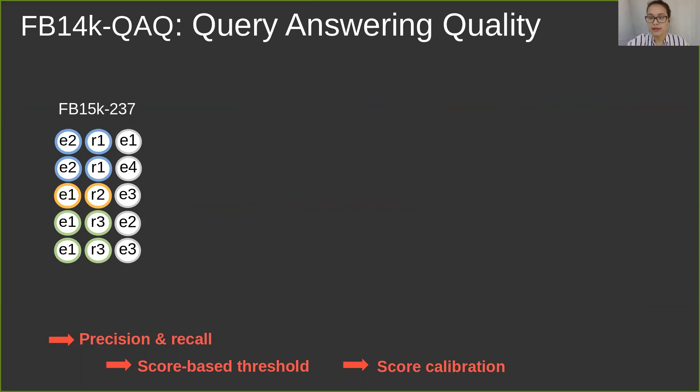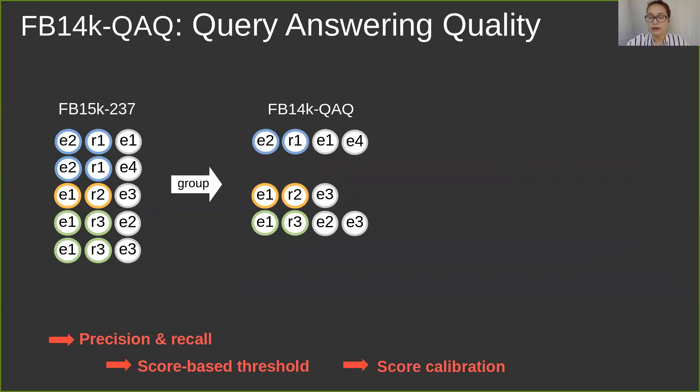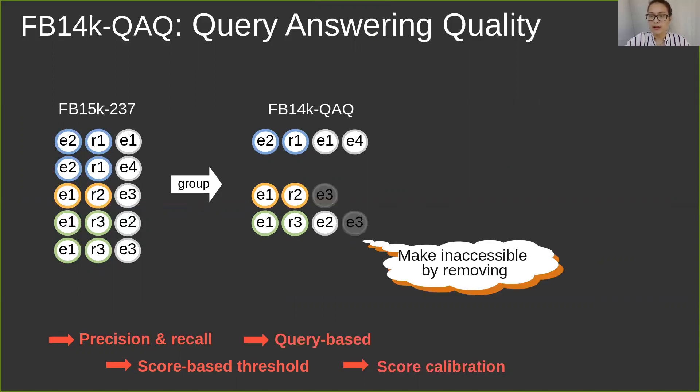Since we are looking for sets of answers now, and not for isolated triples, we need to group the facts accordingly, and the evaluation thus becomes query-based. We also remove some of the entities to create an artificial closed world setting. The data looks similar to this at the end, and the nonsensical queries are generated separately.